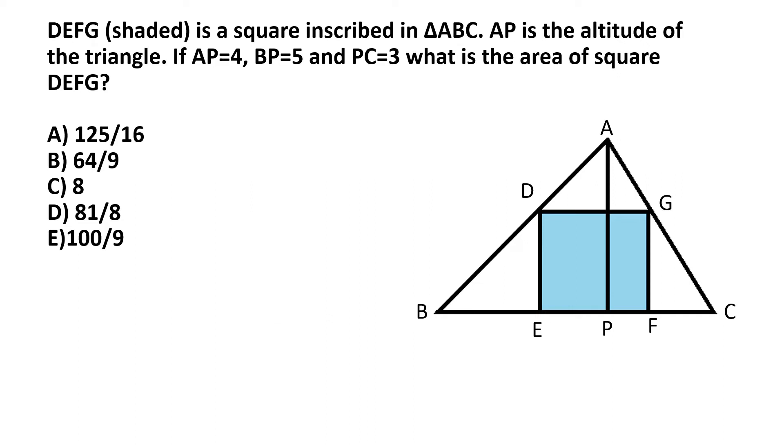We start by labeling in the figure the lengths that are given and these lengths are BP that's equal to 5, PC that's equal to 3 and then the altitude of the triangle AP that's equal to 4.